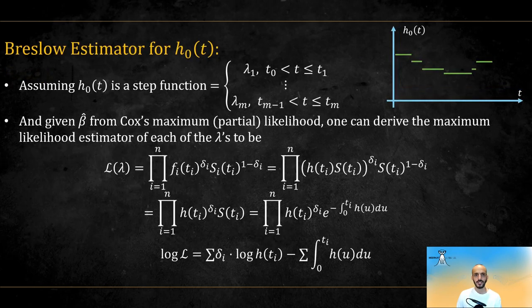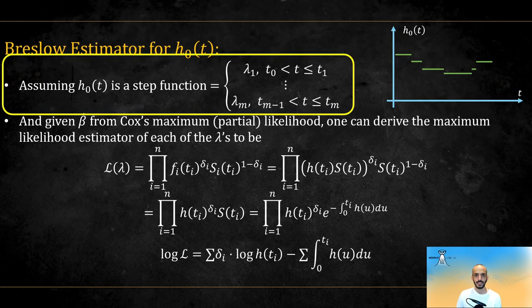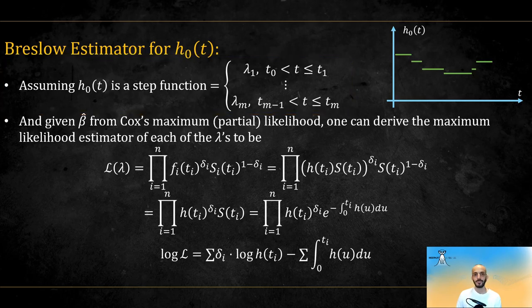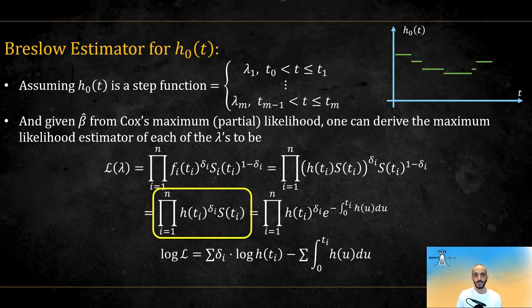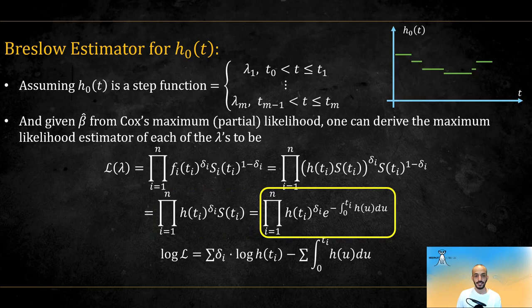So, we assume H0 is a step function, which can be written like this, where each step value is given by a lambda parameter. Remember that the PDF is the hazard times the survival, so we get this and this. Using the identity that the survival is the exponent of the minus cumulative hazard, we get this.